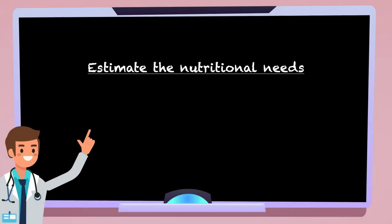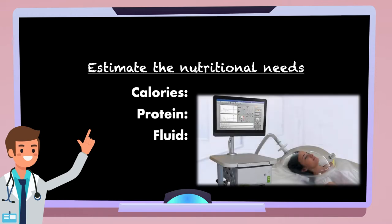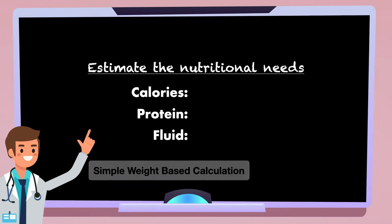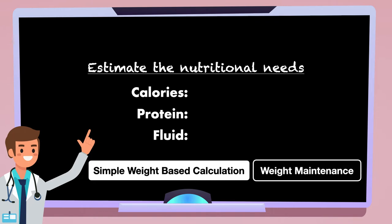The first step is to estimate the nutritional needs of the patient. For tube feeding, it's most important to look at calories, protein, and fluid. There are a number of ways to estimate nutritional needs, such as indirect calorimetry and predictive equations. However, for this patient, we're just going to use a simple weight-based calculation with the goal of weight maintenance.